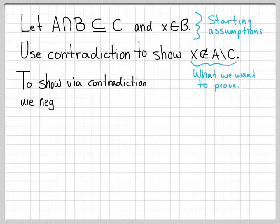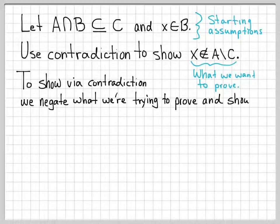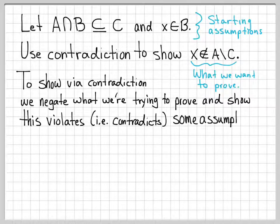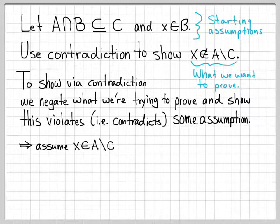When you work with contradiction to prove something, what you do is you negate the thing that you're trying to prove, and then you show that that negation ends up violating some starting assumption or some other assumption in your problem. So here the thing we want to prove is X is not an element of A difference C. So we're going to start by negating that and assuming that the negation is true. The negation of X not an element of A difference C is X is an element of A difference C.